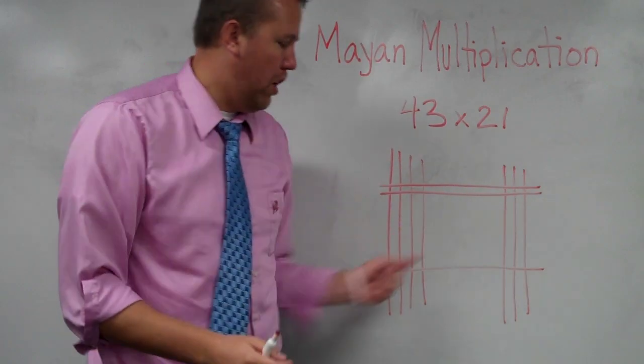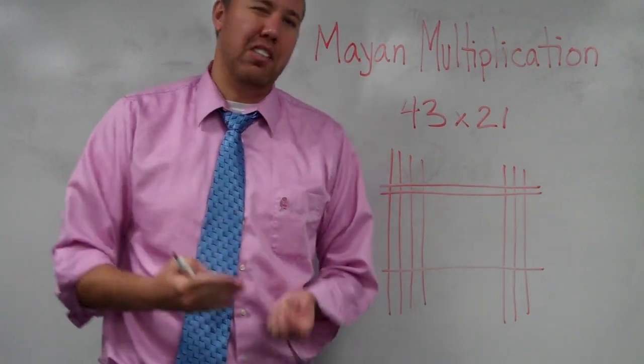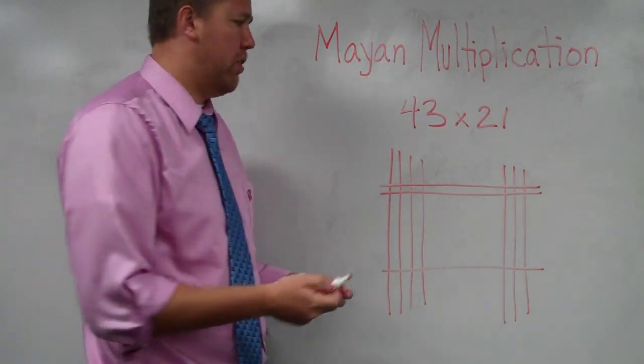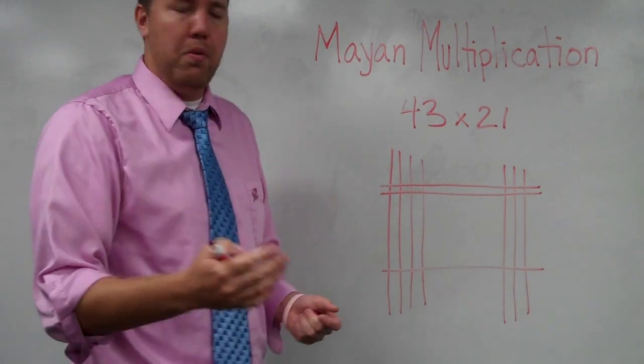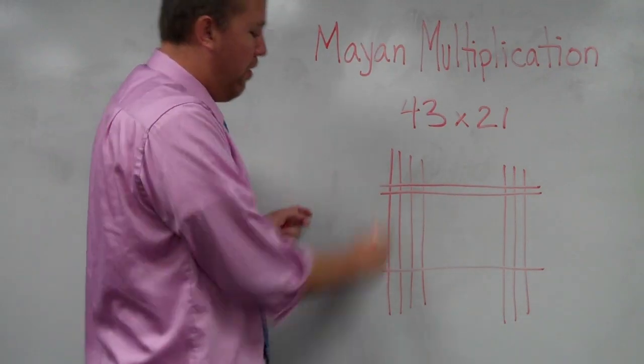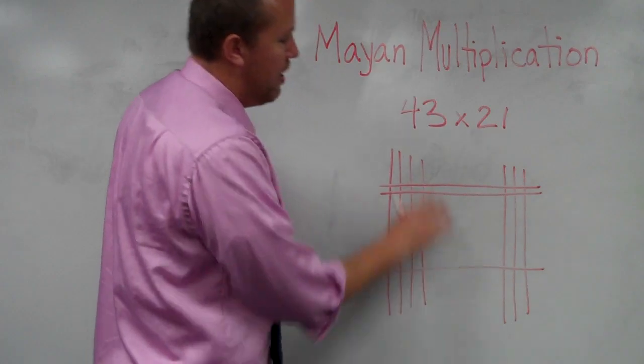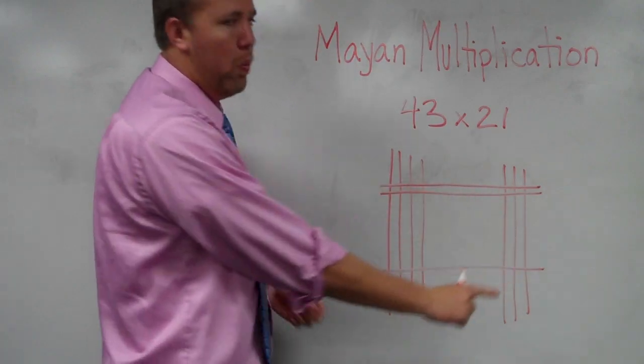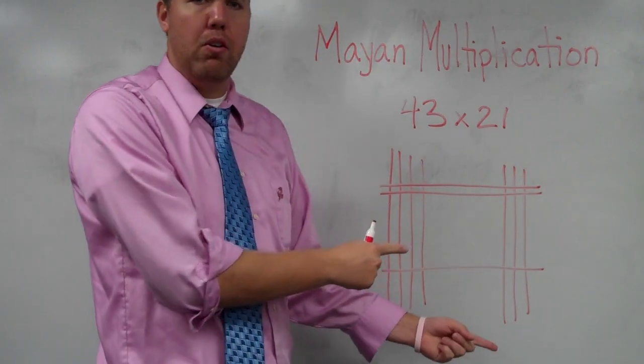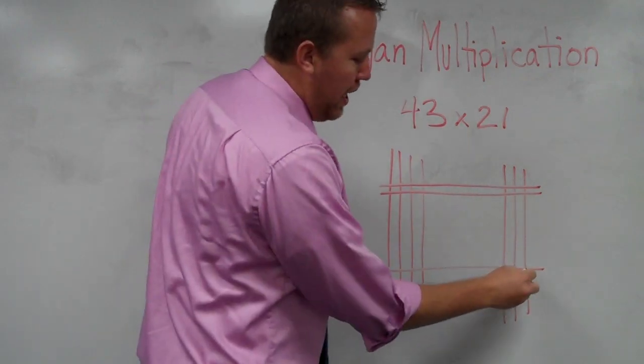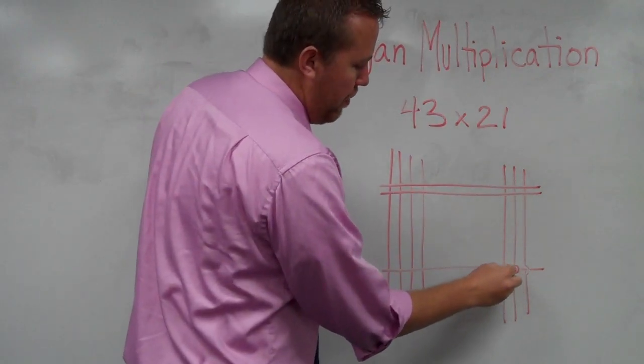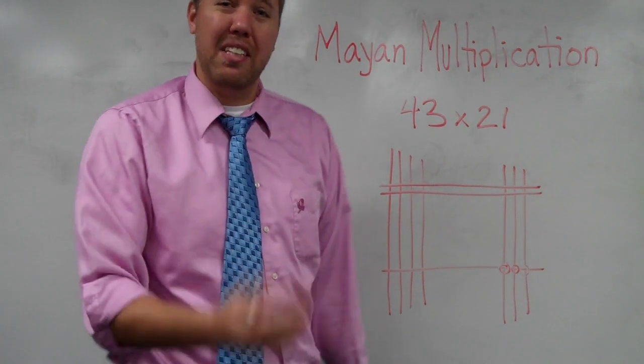Make sure that the lines go all the way across because we're looking at intersecting lines. Those intersections, those vertices that we do. Okay, we've now drawn 43 times 21. Start in the lower right-hand corner just like with our algorithm, and we count the amount of times that those lines intercept.